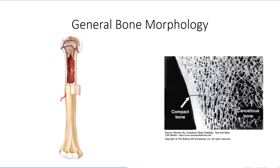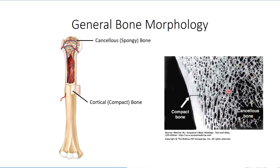For any given bone, the tissue exists in two distinct morphologies. The outer portion is typically solid and is referred to as cortical or compact bone. This is what provides bone with its strength and resistance to deformation from external forces. The inner cavity of most bones is composed of cancellous or spongy bone. As the name implies, it has a porous appearance that is typically filled with bone marrow, which serves to decrease the overall weight of the bone and helps with body movements.